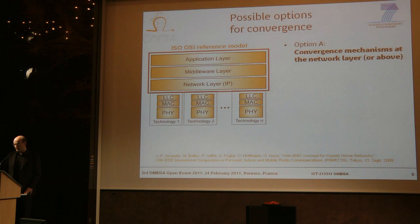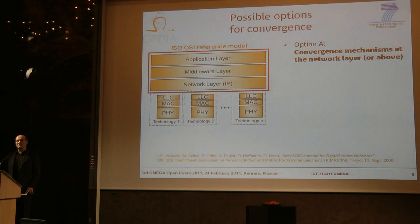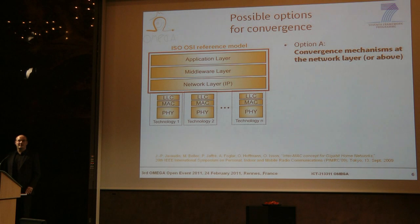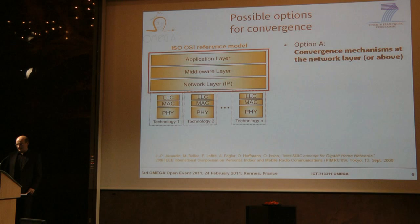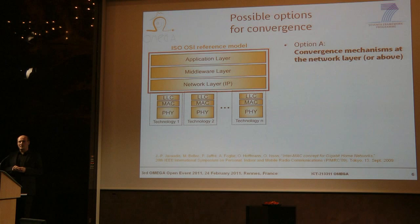First of all, option A could be convergence mechanisms at the network layer or above. But if you go for this option, you may not get the best performance in the end, though with low complexity you can implement the convergence in software. It would not be better than IEEE 802.21 — this is media-independent handover, which has access networks in its focus and defines abstraction layers for 3GPP, LTE and WiMAX. And it does not actually define how a technology should be selected or how mobility is managed in the home, so this leaves open all these questions.